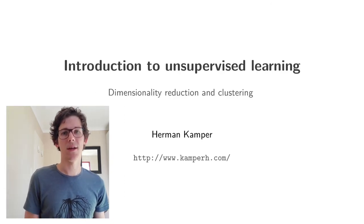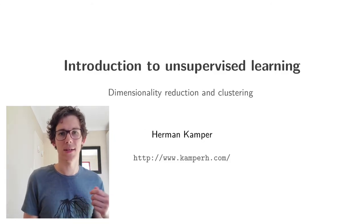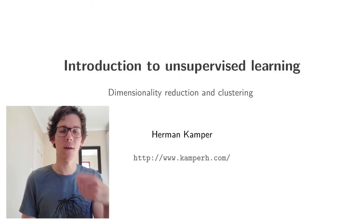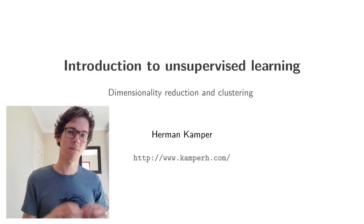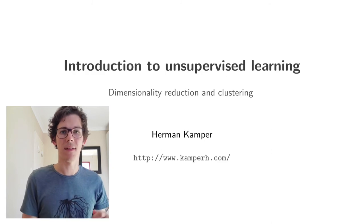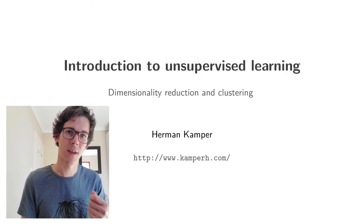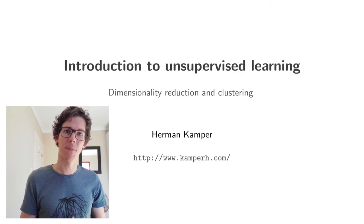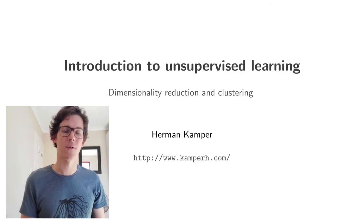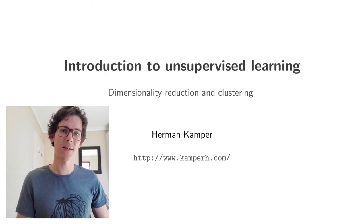So in supervised learning, normally what happened was we got a training set of data, and each item in our training set would have a label — maybe a class or a value that we're trying to predict. In contrast, in unsupervised learning, we get a data set, but the items aren't labeled. We don't have a target value that we're trying to predict, and we want to make sense of this unlabeled data set.